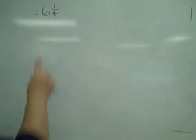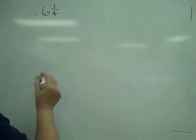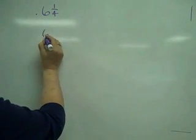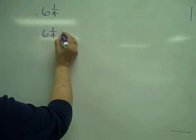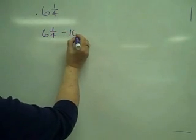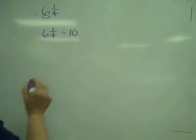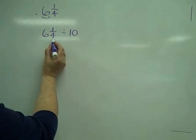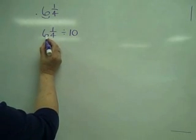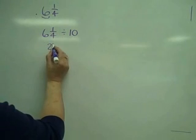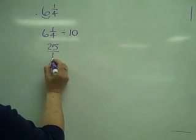Another example, 6 and 1/4 tenths. So this means 6 and 1/4 divided by 10. One place value gives me my tenths. Okay, changing to an improper fraction. 4 times 6 is 24, plus 1 is 25 over 4.